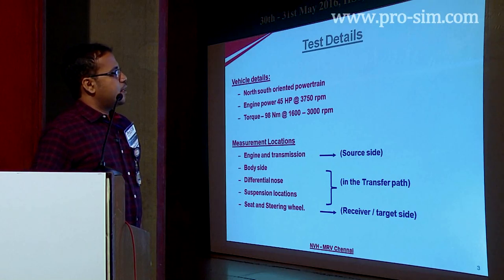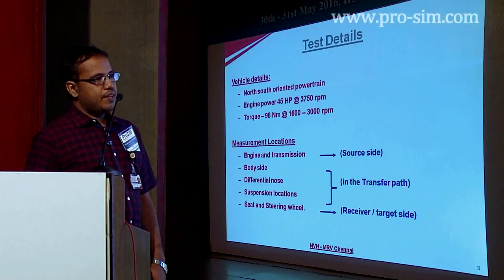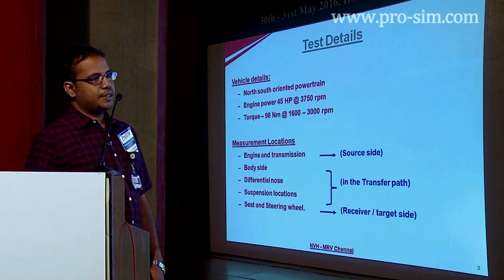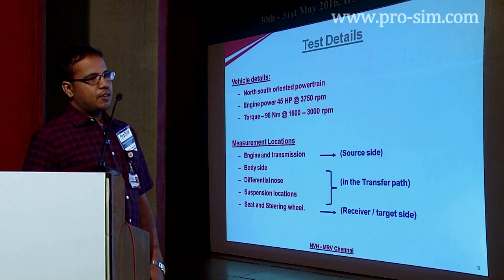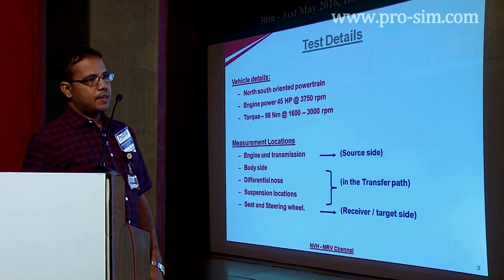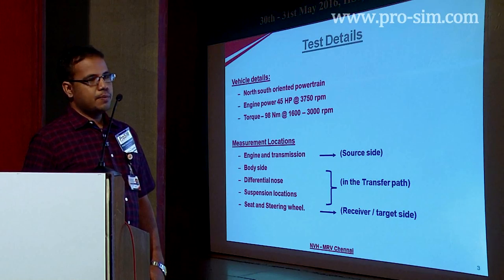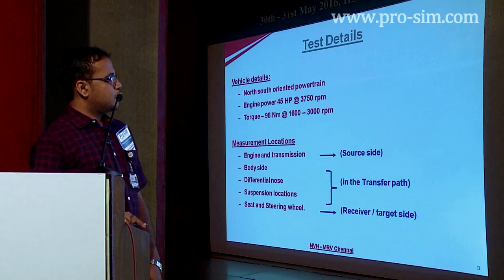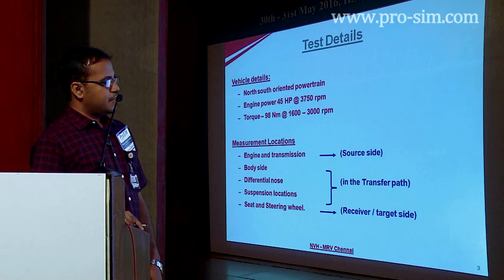This is regarding the test details about the vehicle. It is a front engine rear wheel driven vehicle. The powertrain orientation is in the north-south direction. The engine is a two-cylinder engine which can develop torque of around 98 Newton meter and power of around 48 HP. We have done measurement on the source side — engine and transmission. On the transfer path we have measured on the body side, and the target we have measured in the seat and steering.